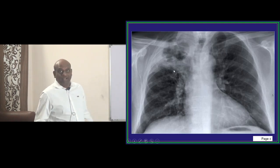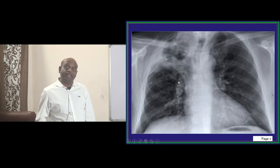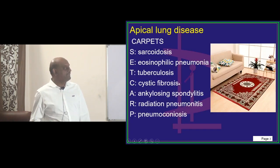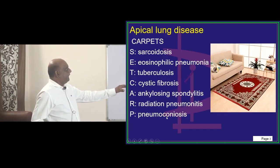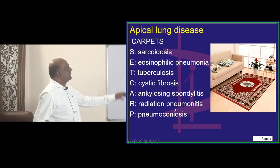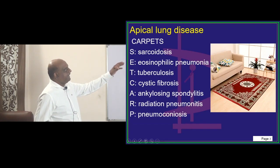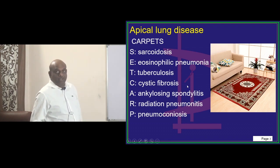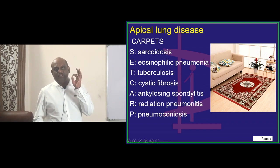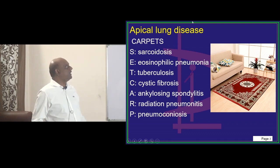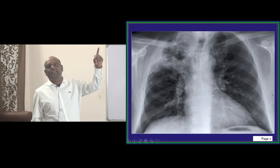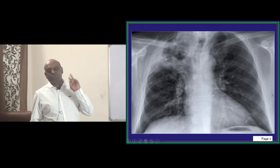R is radiation pneumonitis, which is apical — this question has been asked many times in the NEET PG exam. P is pneumoconiosis, E is eosinophilic pneumonia, T is tuberculosis, and S is sarcoidosis. CARPETS is the mnemonic you need to remember for apical lung disease — that is mnemonic number two.